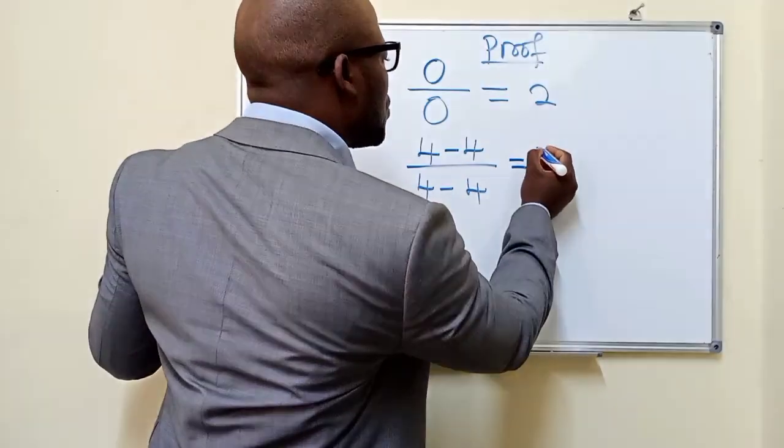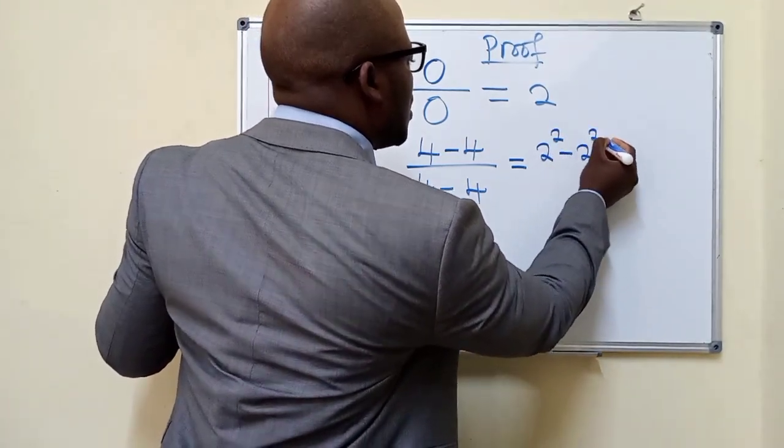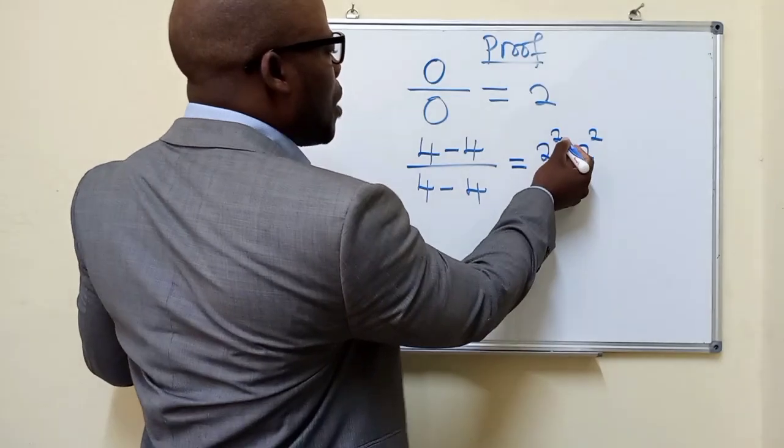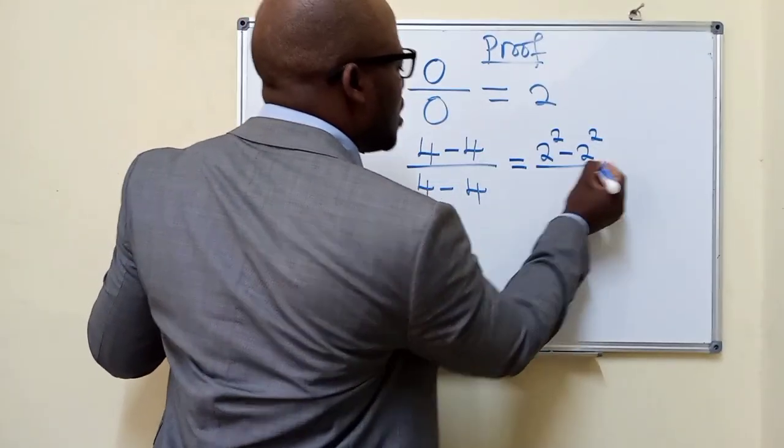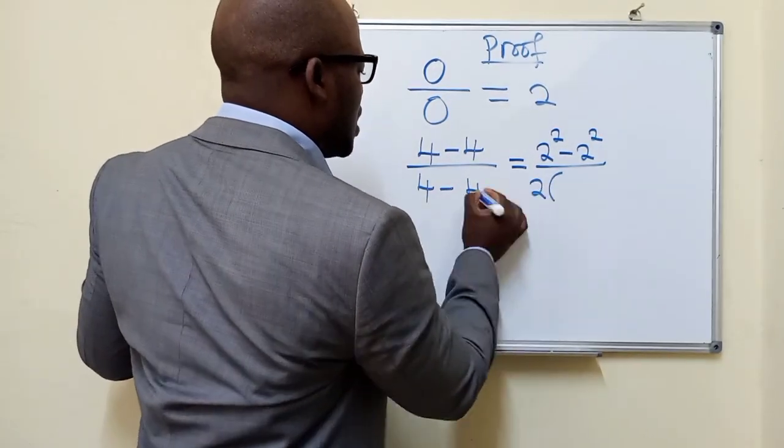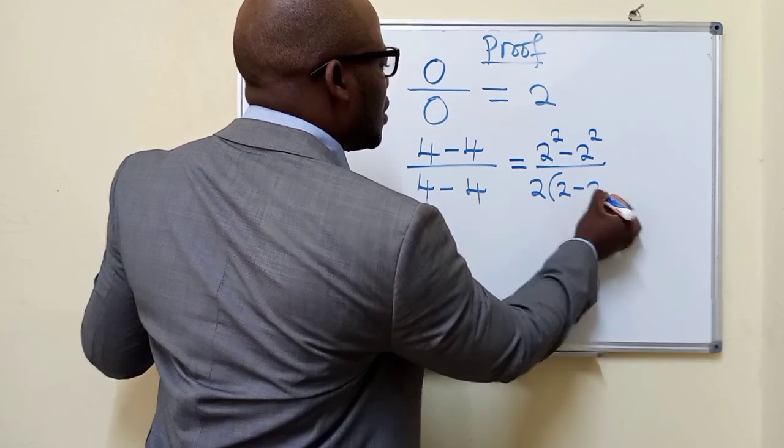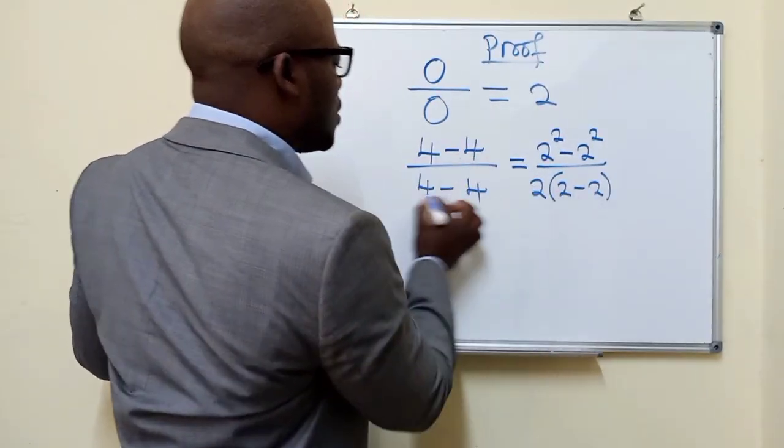Difference of two squares, this is how it will look like. We know that 2 squared is 4, and 2 squared is also 4. And then over, here, factorization. I'll write a 2 here, and then I shall remain with 2 minus 2. So what we have here is the same as this, and what we have here is the same as this.